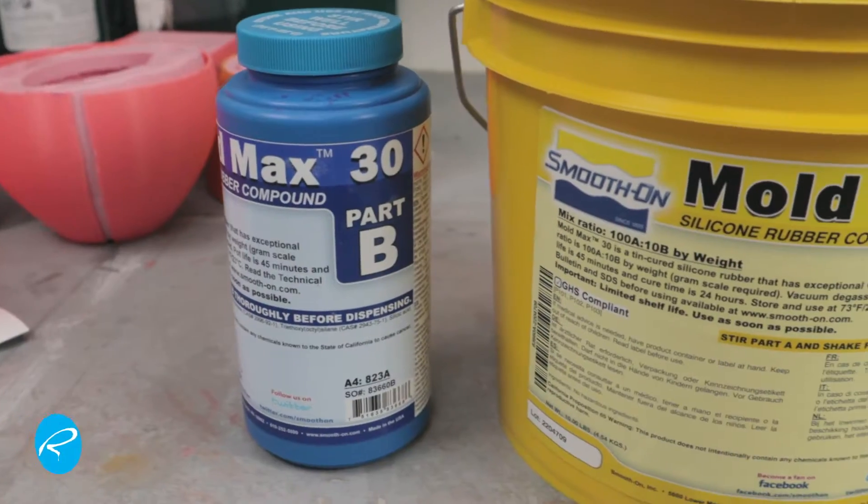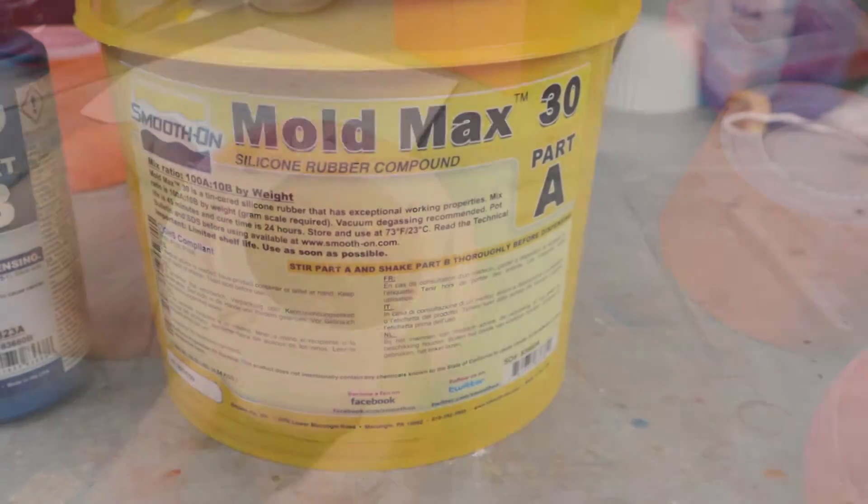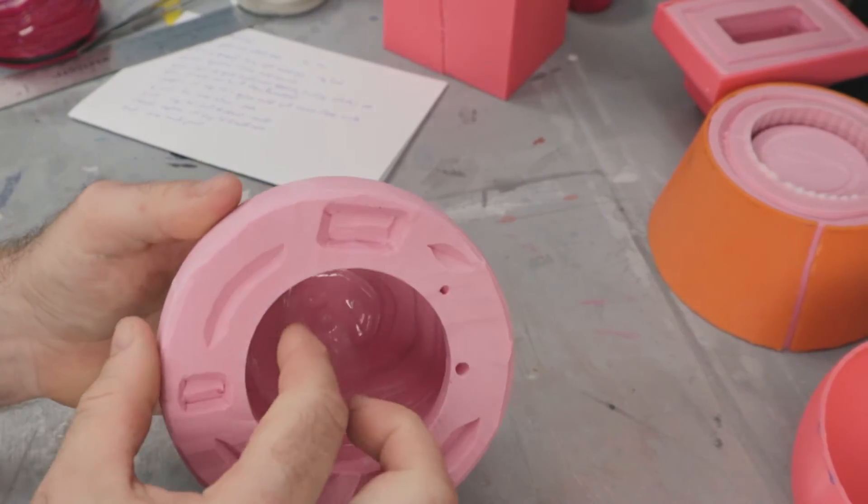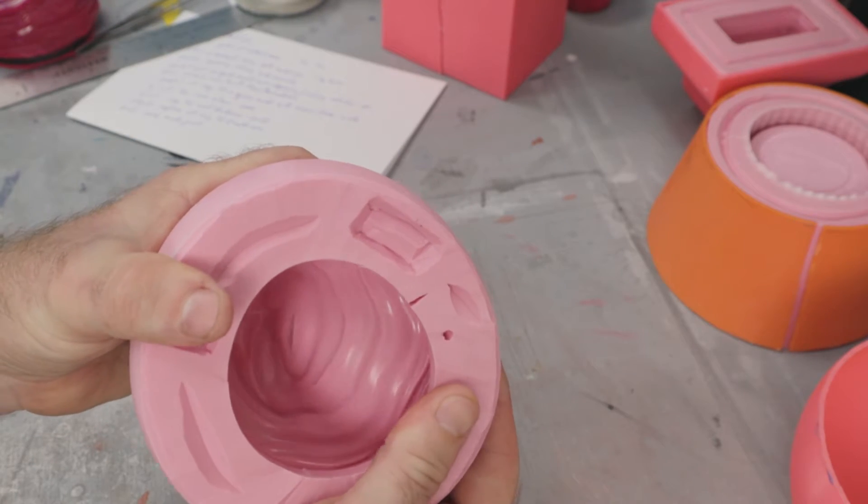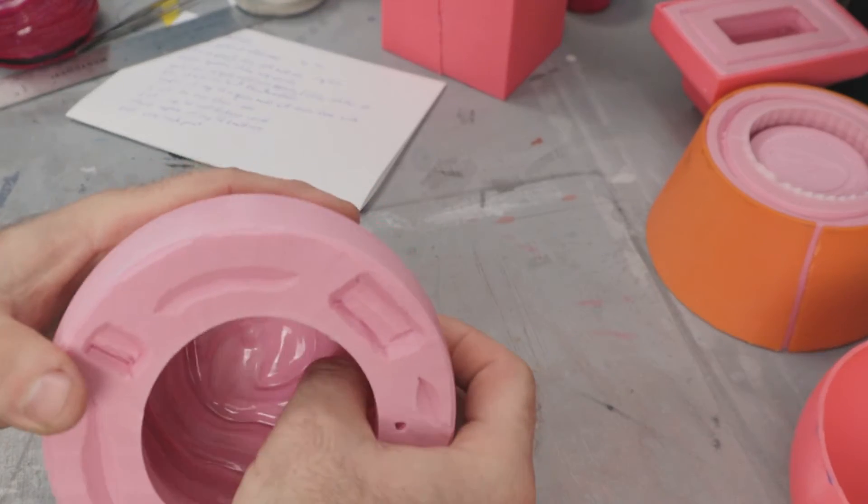I pay with shipping and tax about 300 bucks Canadian for a gallon of tin-cured silicone. Another issue is the thickness of the mold. It can be easier to demold if the walls are a consistent thickness. The silicone will be the same stiffness all the way around, giving it the same amount of flexibility all over.